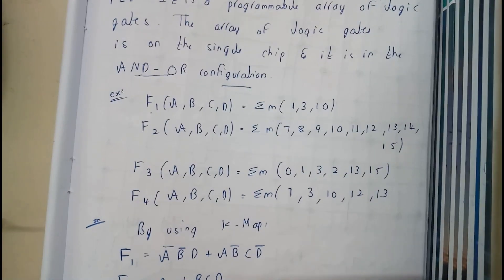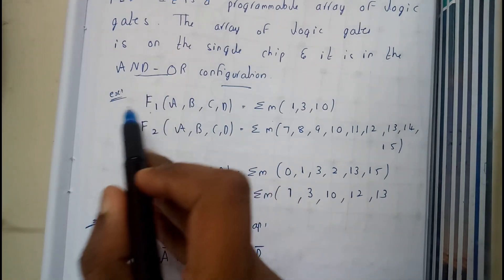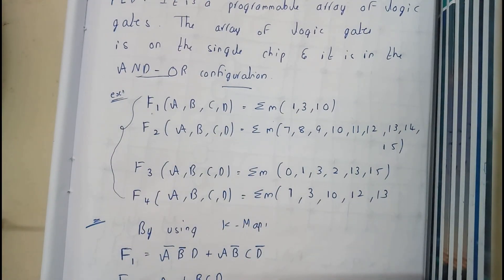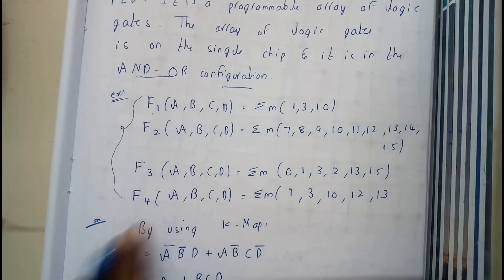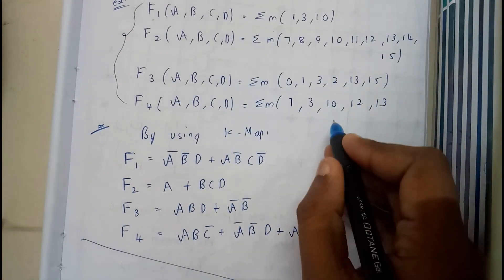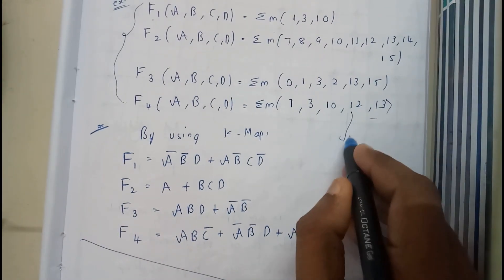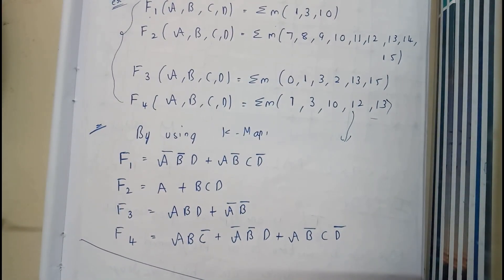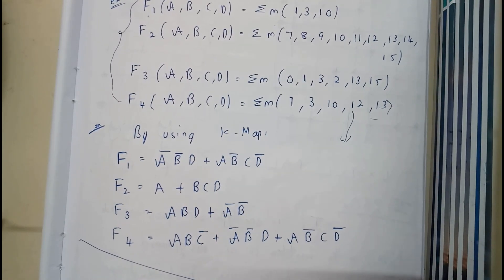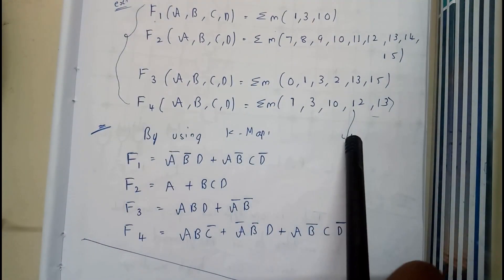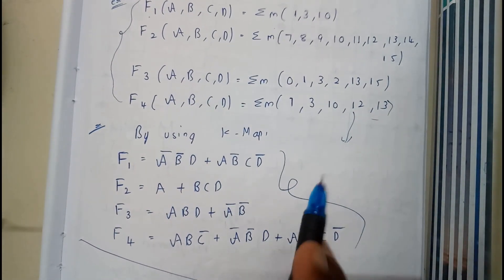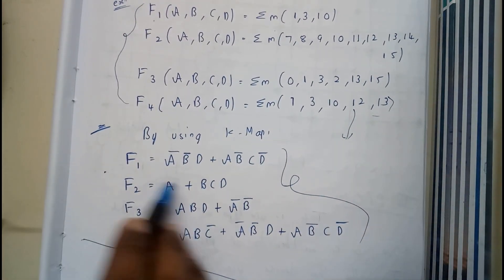Basically, let us assume that the given question has 4 kmaps. By using kmaps, you need to solve these. I have just skipped that step because it's going to take a bit of time. So find the equations or the boolean expressions using kmap, and we're going to get these expressions.